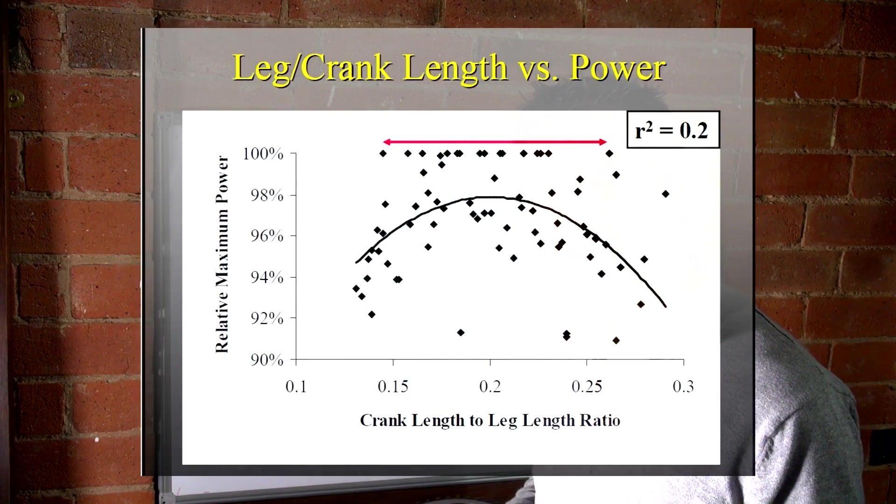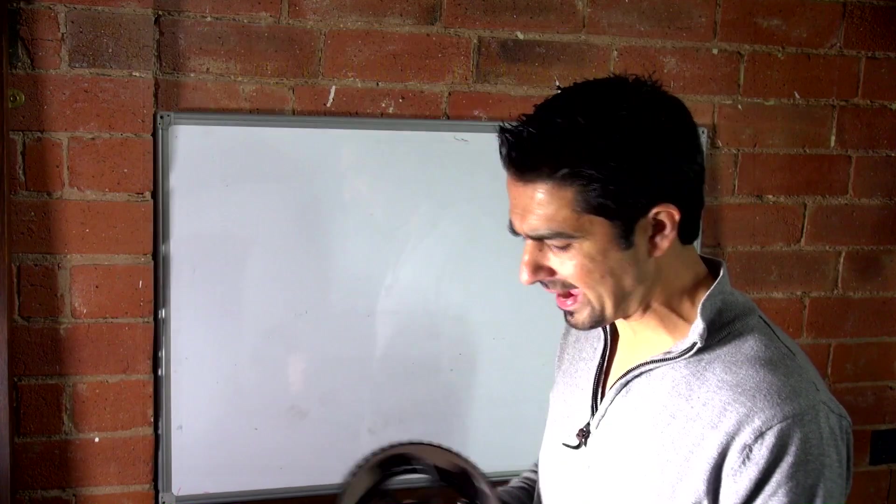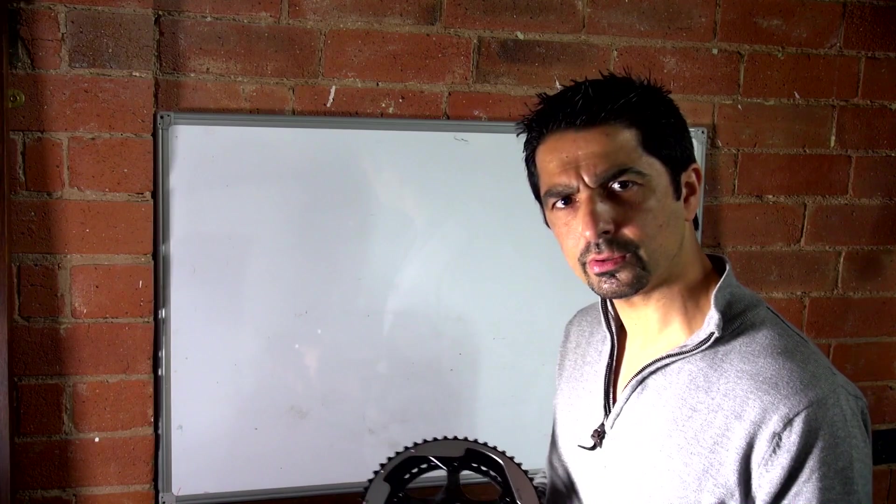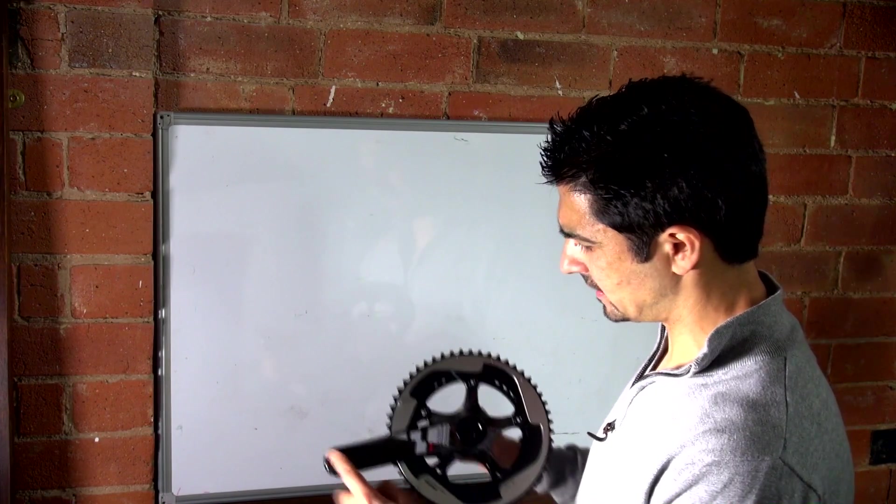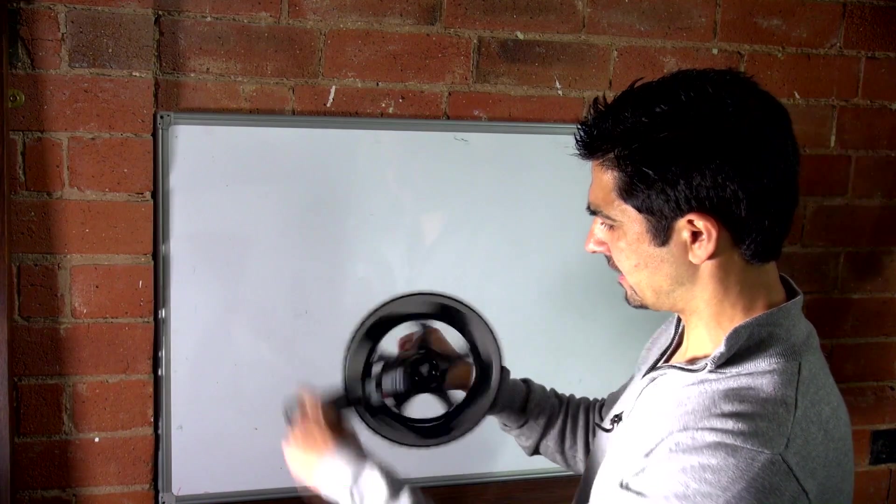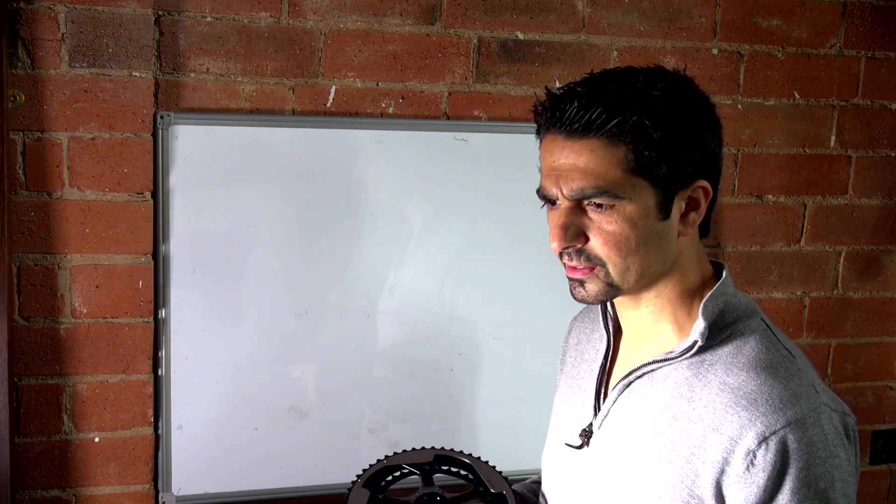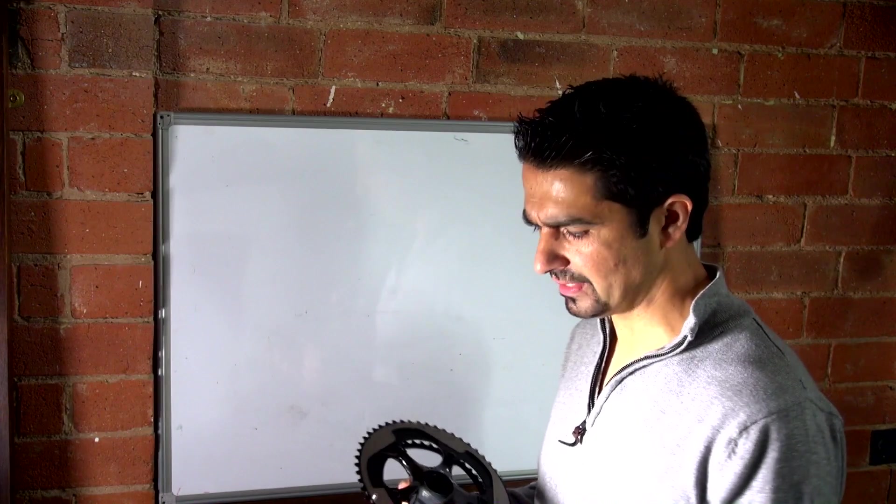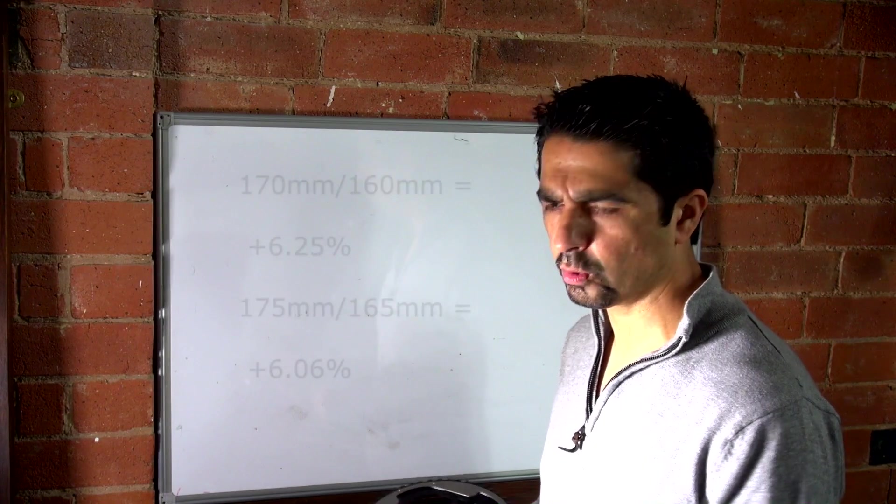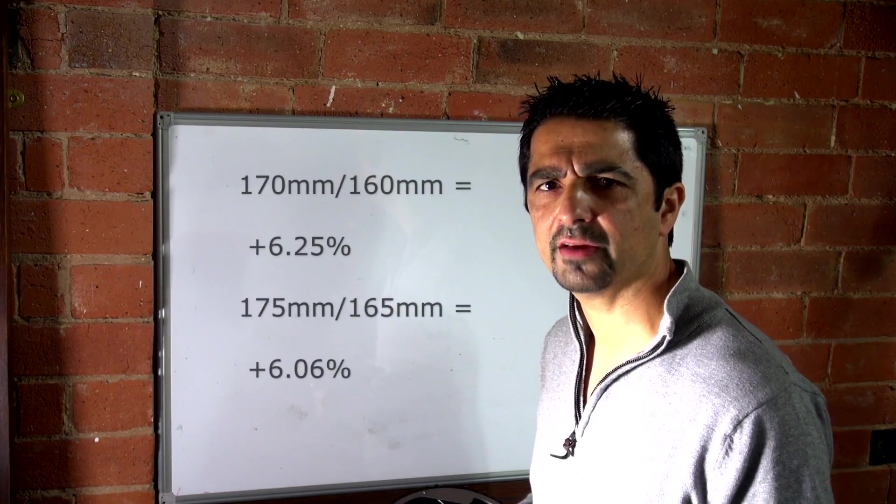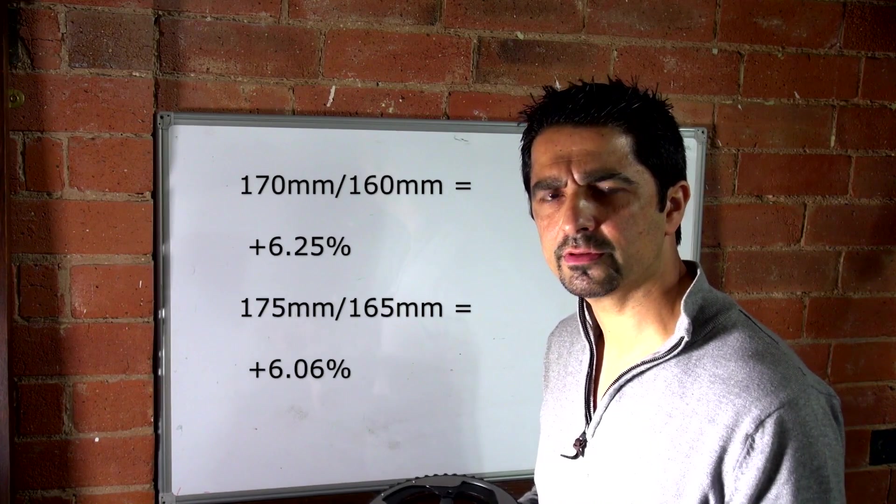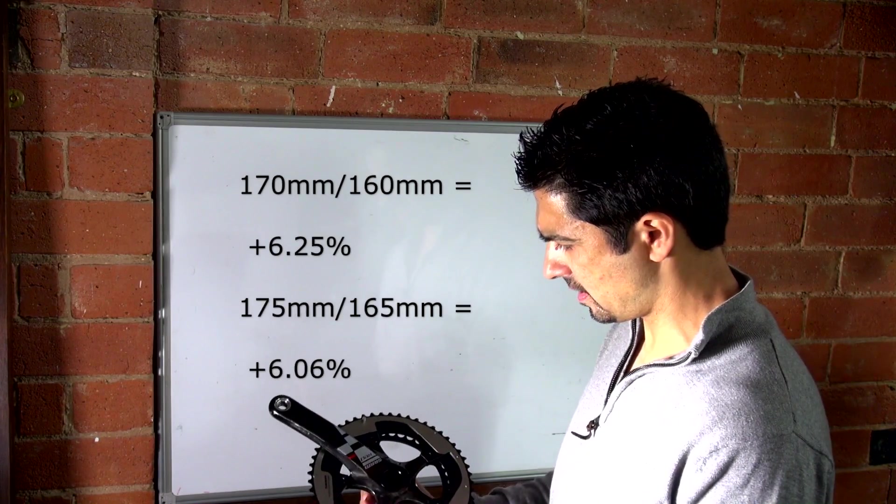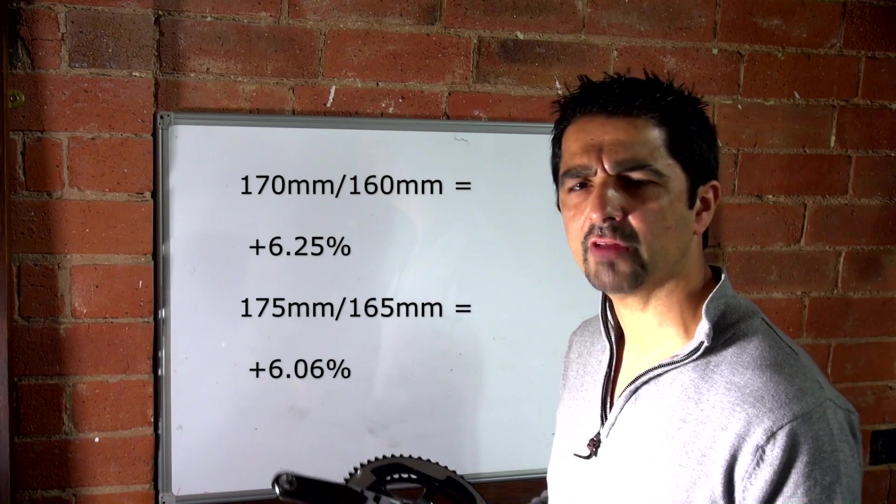Further, does the crank length have any relationship between the power, the torque, your cadence? It must do. It must do because the crank length is an integral part of bike mechanics. If we start from the basics, if you think about a crank length of let's say 170mm versus 160mm, or 175mm versus 165mm, that's a 6% difference.